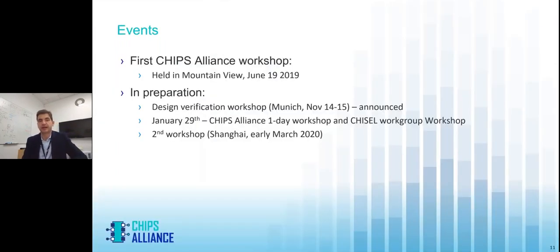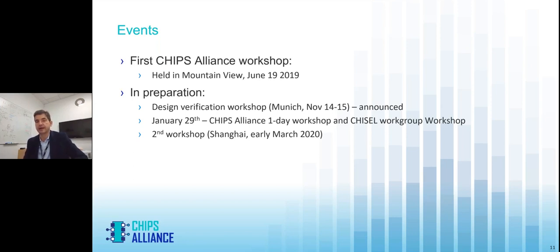Our very first CHIPS Alliance workshop was held on Google campus in Mountain View on June 19, 2019 — an exciting event, fully sold out with 199 participants. We now have a design verification workshop co-organized with FOSSI, to be held in Munich at Munich University of Applied Sciences on November 14th and 15th. On January 29th next year, we are planning a CHIPS Alliance one-day workshop and a Chisel workgroup workshop. Our second workshop will be in Shanghai in early March 2020, co-hosted by Fudan University and Alibaba.